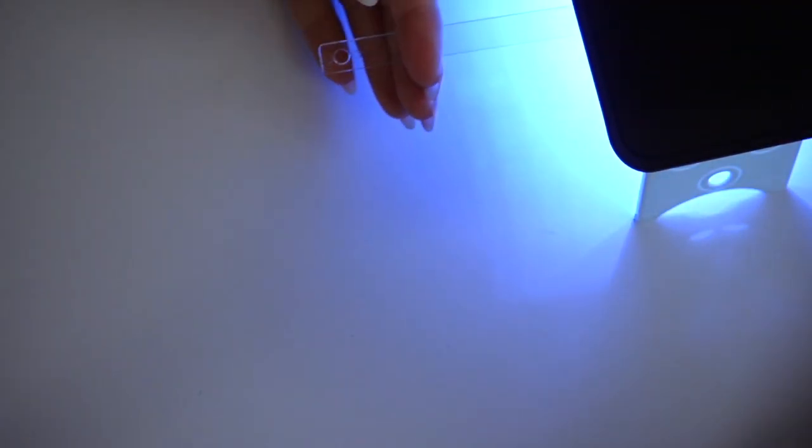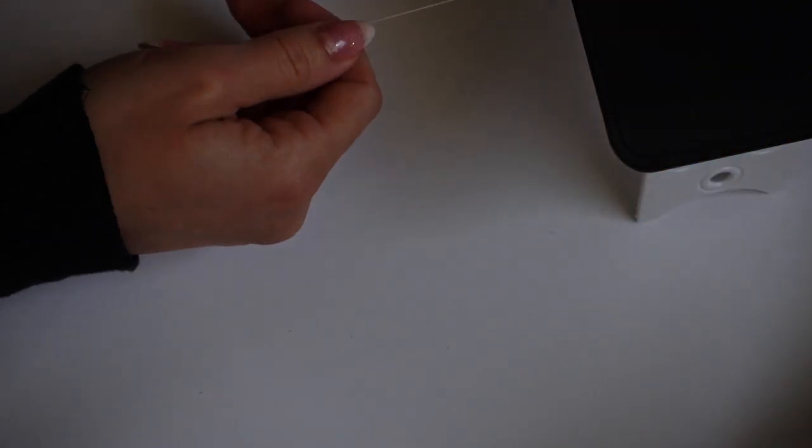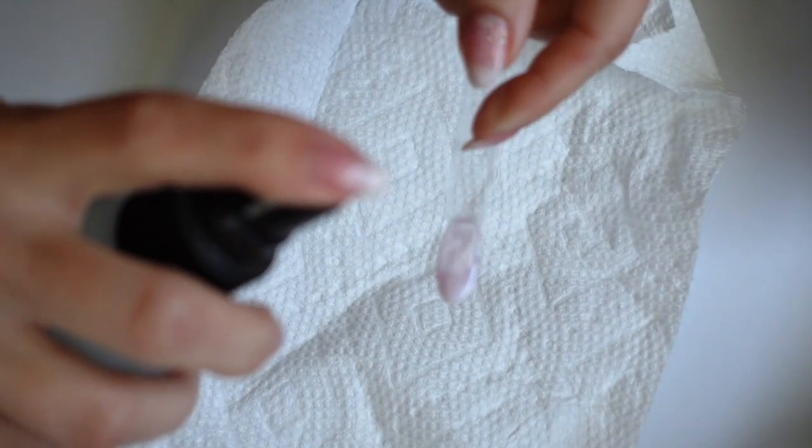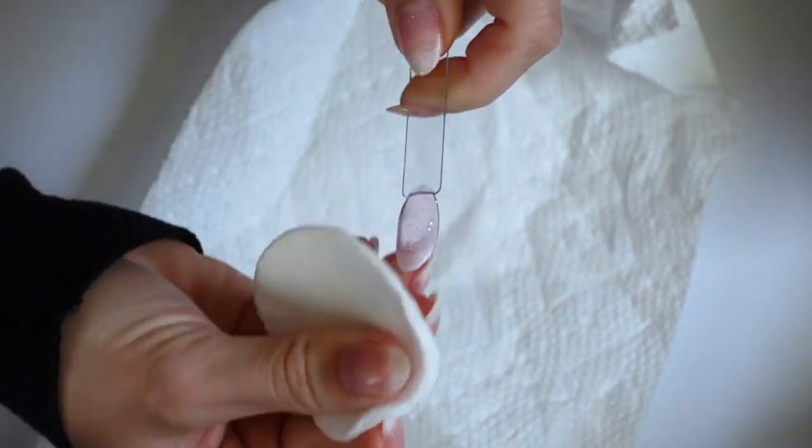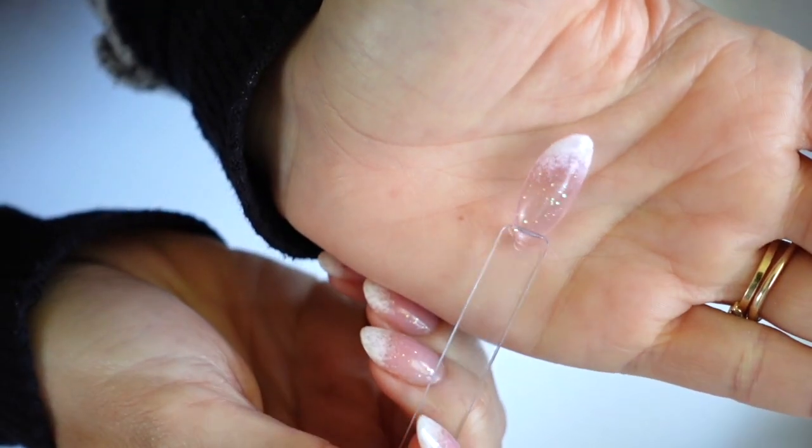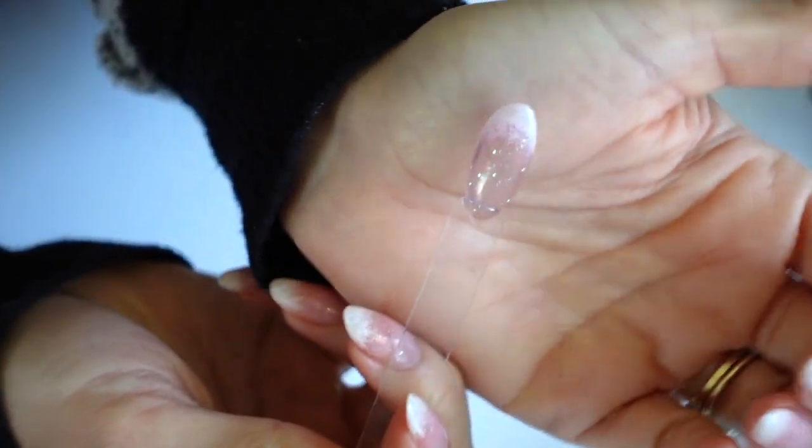When it's done, I am going to grab my alcohol spray and just spritz it on the nail, using a cotton round to remove that sticky layer, and we are basically done. It's kind of hard to see it on this clear, but here it is up against my skin, and you can see it really does mimic a natural nail.